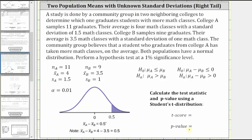So the p-value is equal to the probability that X bar sub A minus X bar sub B is greater than 0.5. And the p-value is also the area of the shaded region here on the right. Notice how we have a right tailed test.